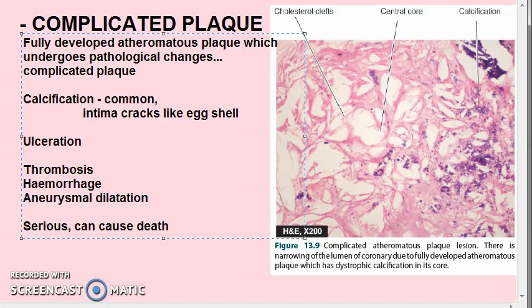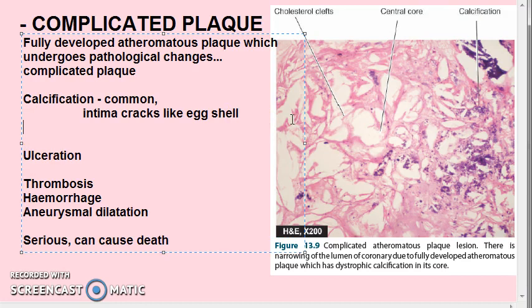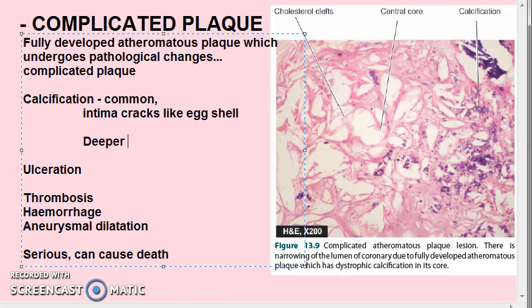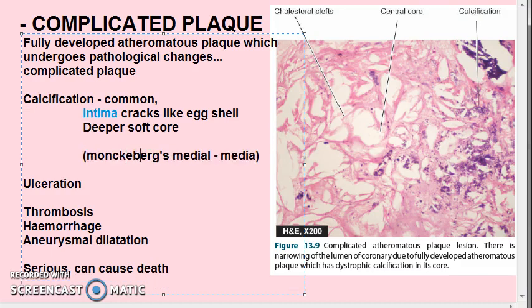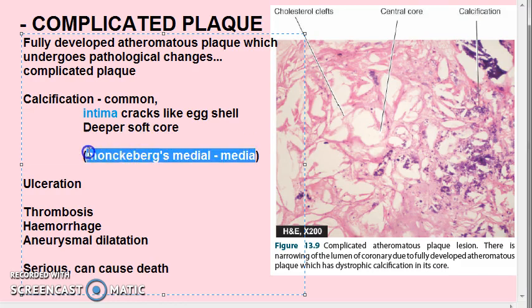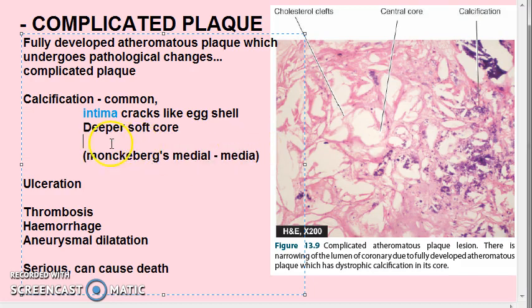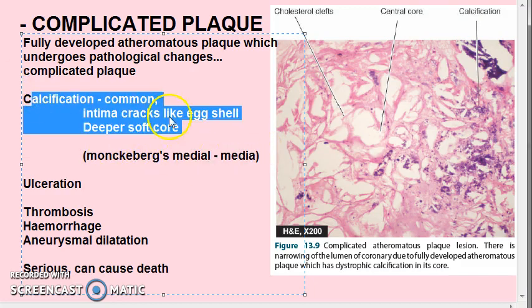When the vessel is incised and opened, you can hear cracks like an eggshell — that is calcification. In microscopy, calcium salts are deposited in the vicinity of the necrotic area and the soft lipid pool deep in the thickened intima. This atherosclerotic intimal calcification differs from Monckeberg's medial calcific arteriosclerosis, which affects the tunica media; here, calcification affects the intima.